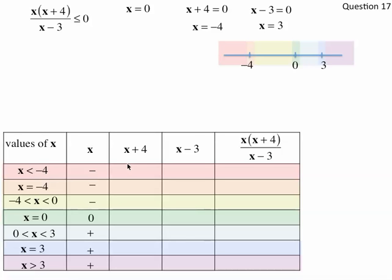For x plus 4: if x is less than negative 4, like negative 5, then negative 5 plus 4 is negative 1, so that's negative. If x equals negative 4, then negative 4 plus 4 is 0. If x is anything greater — for example, between negative 4 and 0, like negative 1 — negative 1 plus 4 is 3, which is positive. So the rest of these are all positive.